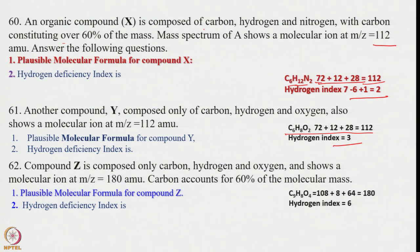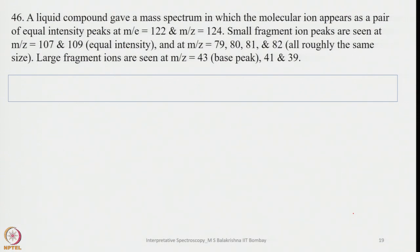Another example: M/Z = 180 with carbon at 60%. Calculating: 6×12 = 72, with 8 hydrogens and 4 oxygens (C6H8O4) coming to 180. The hydrogen deficiency index here is 3. Another problem: a liquid compound gave a mass spectrum with a molecular ion as a pair of equal-intensity peaks at m/z = 122 and 124, with small fragment ion peaks at 107 and 109, and peaks at m/z = 79, 80, 81, 82. Large fragment ions are at m/z = 43.